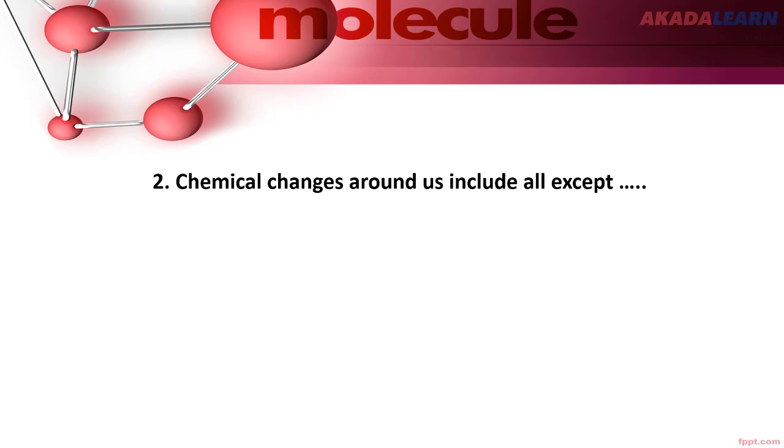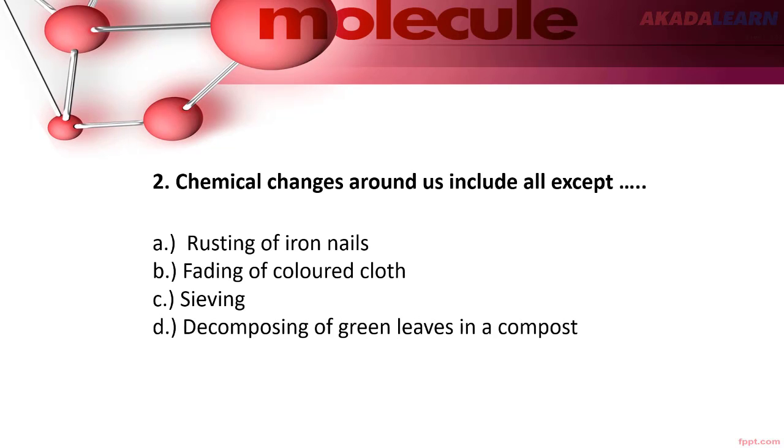Question two: Chemical changes around us include all the following except A) rusting of iron nails, B) fading of colored clothes, C) sieving, or D) decomposing of green leaves in a compost.